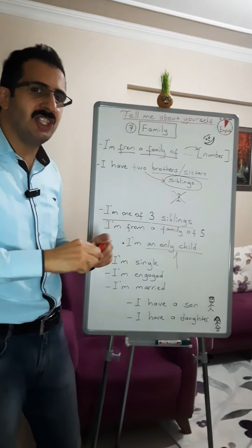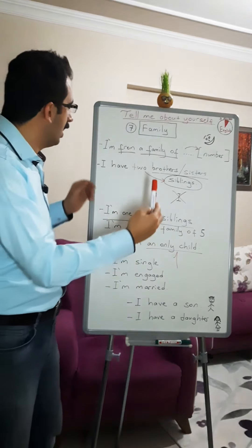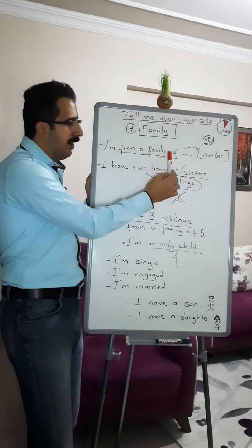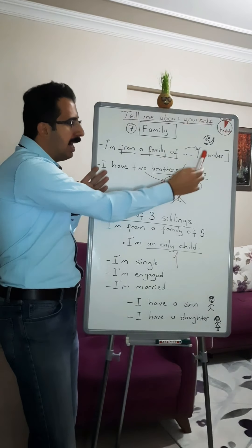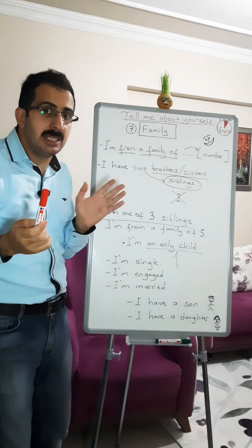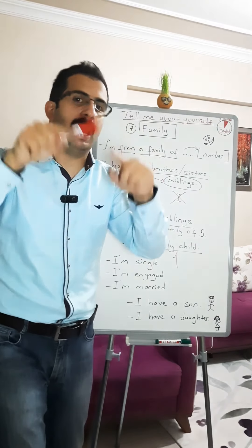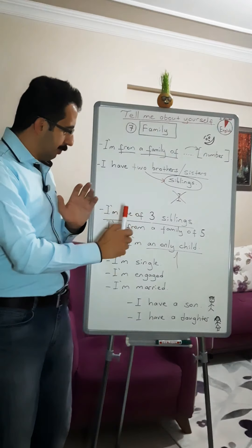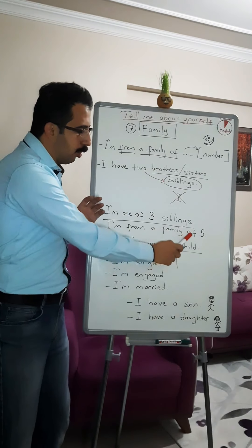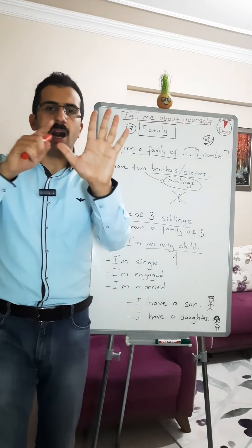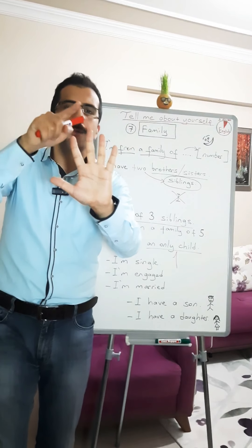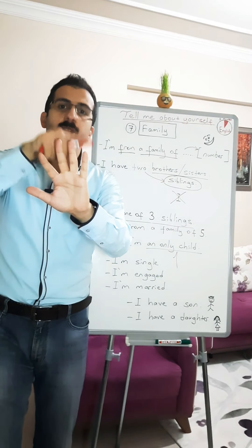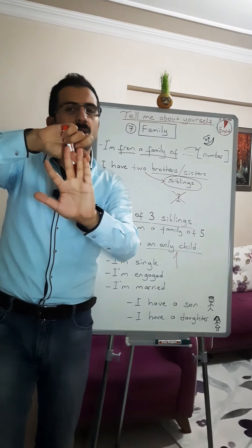Now let's look at the explanations and examples. For example, you can say: 'I am from a family of five' — listing the number of people in your family. For example: I, my mother, my father, my brother, my sister — or my brothers or my sisters.